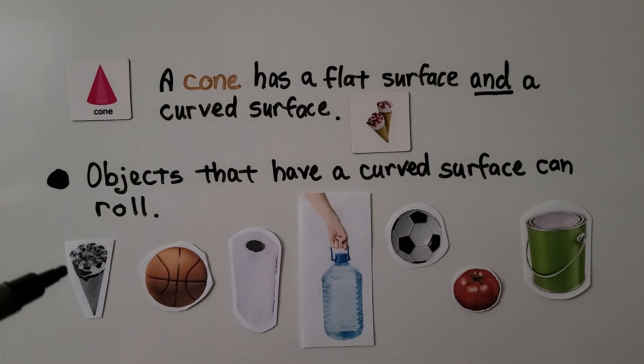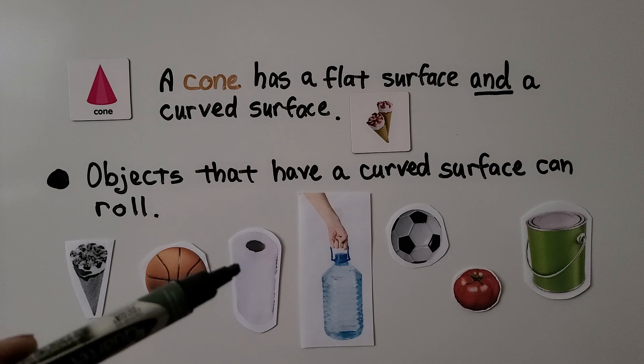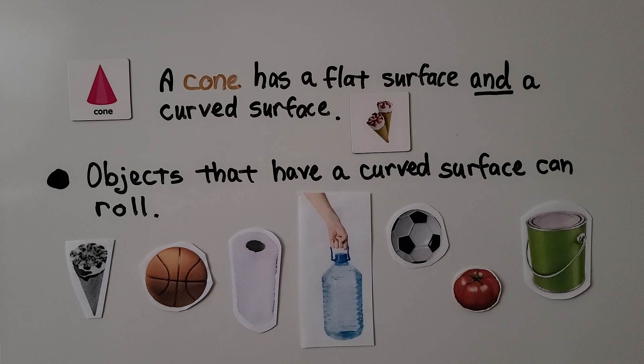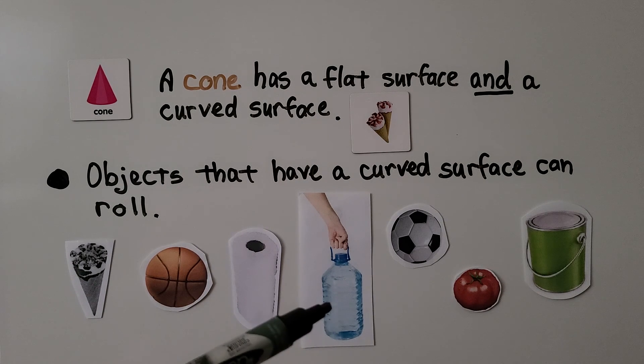If we laid the ice cream down on its side, we'd be able to roll it. We can roll a ball. If we put this roll of paper towels down, we would be able to roll it. If we put this water jug on its side, we'd be able to roll it.